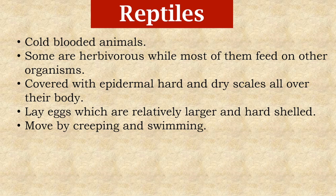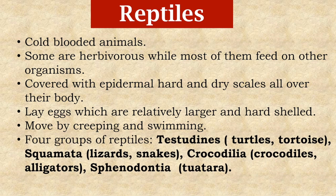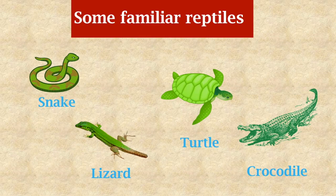Reptiles move by creeping and swimming. Four groups of reptiles are Testudines, Squamata, Crocodilia, and Sphenodontia. Animals that come under these respective groups are written in the bracket. Here are some familiar examples of reptiles: snake, lizard, turtle, and crocodile.